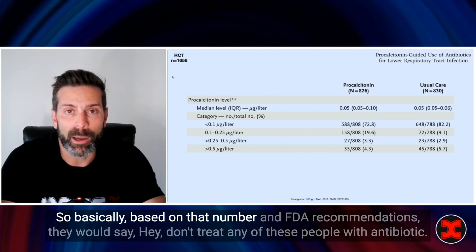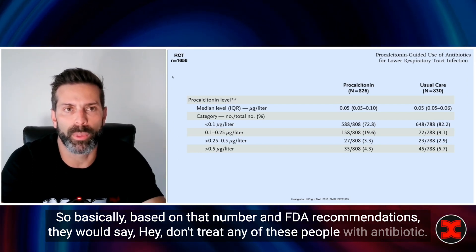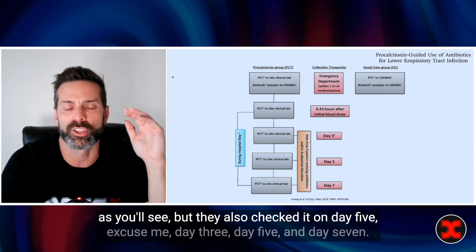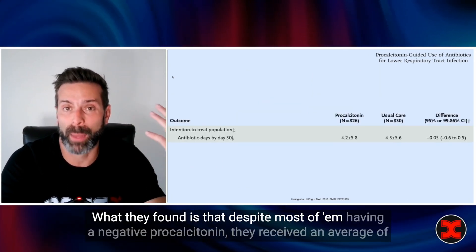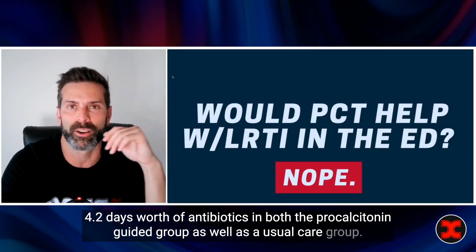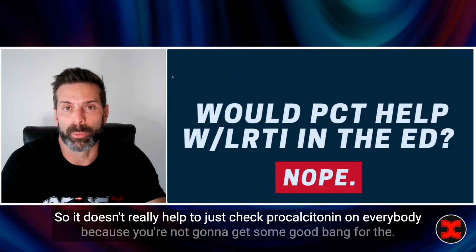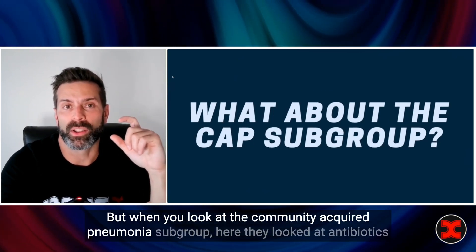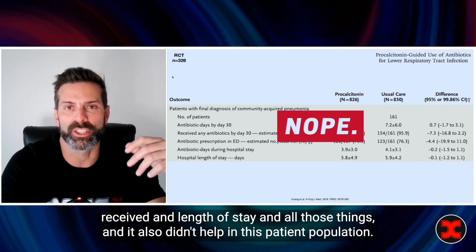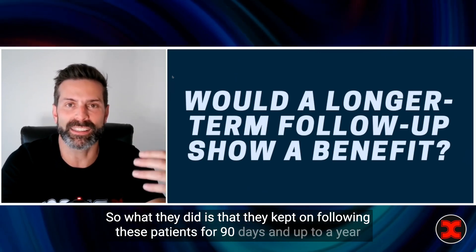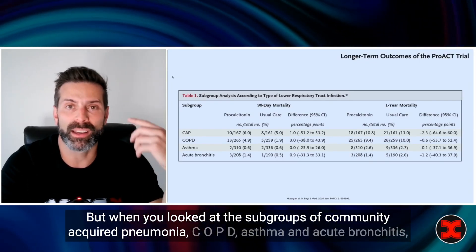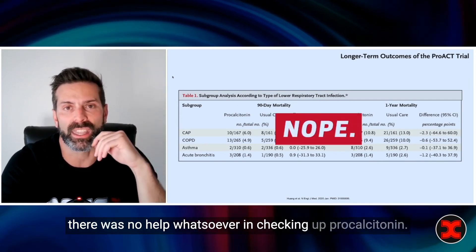This was looked at in a New England Journal of Medicine study with a large number of patients. The median procalcitonin level was 0.05, so based on FDA recommendations they would say don't treat any of these people with antibiotics. But even with a procalcitonin guideline, clinicians still went ahead and treated these patients. They also checked procalcitonin on day three, day five, and day seven. Despite most patients having a negative procalcitonin, they received an average of 4.2 days of antibiotics in both the procalcitonin-guided group and the usual care group. Looking at the community-acquired pneumonia subgroup, it also didn't help with antibiotics received or length of stay. They followed patients for 90 days and up to a year examining mortality differences, but across subgroups of community-acquired pneumonia, COPD, asthma, and acute bronchitis, there was no benefit whatsoever — procalcitonin did not help mortality at all.